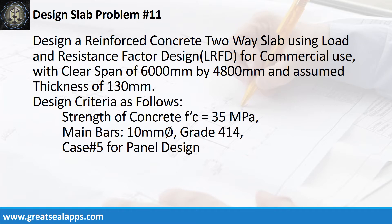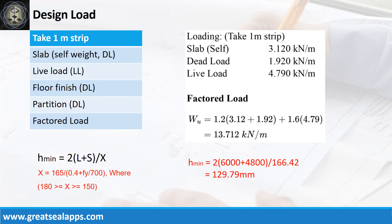Design a reinforced concrete two-way slab using load and resistance factor design for commercial use, with a clear span of 6,000 mm by 4,800 mm and an assumed thickness of 130 mm. Strength of concrete: 35 MPa. Main bars: 10 mm bar, grade 414. Case number 5 for panel design. The uniform load for 130 mm thick slab is 3.12 kN/m. Commercial live load is 4.79 kN/m. Other dead load (floor finish and partition) is 1.92 kN/m, for a factored load of 13.712 kN/m.